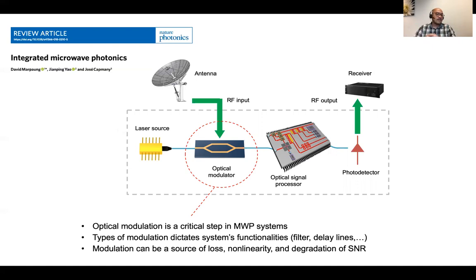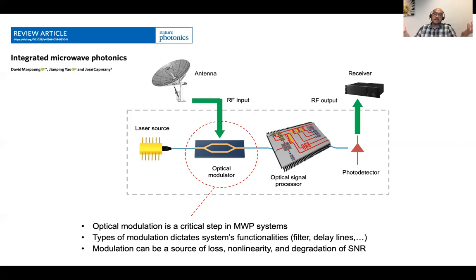Optical modulation is ever present in nearly all microphotonic systems. It's the first step that encodes the RF signal to the optical domain. But the significance of the optical modulator is beyond just encoding of information. The type of optical modulation used in the microphotonic system dictates the system functionalities — for example, if you want to optimize a certain performance of an RF photonic filter or delay lines, you need to choose a certain kind of modulation like phase modulation or single sideband modulation. Beyond that, if optical modulation is not done well, it can be a massive source of RF-to-RF losses, non-linearity, and degradation of signal-to-noise ratio and noise figure.